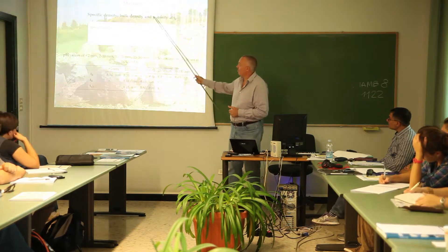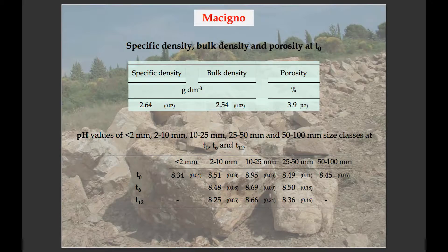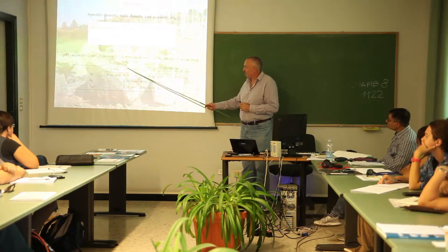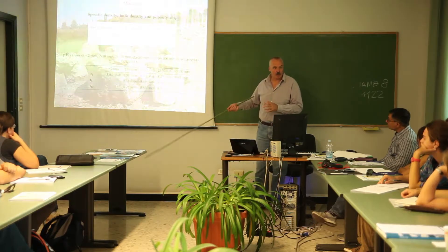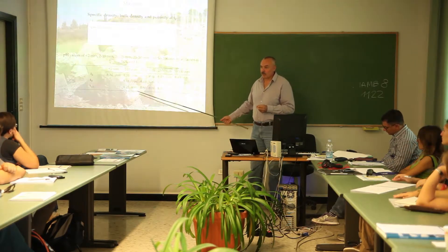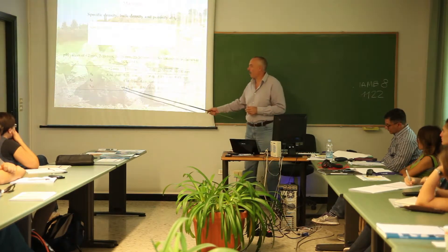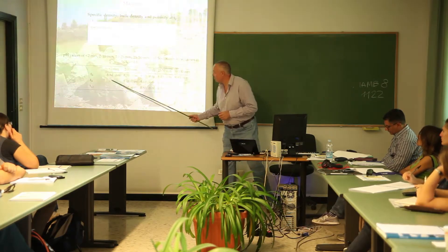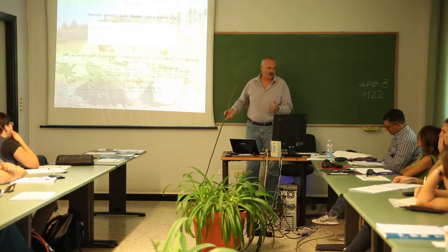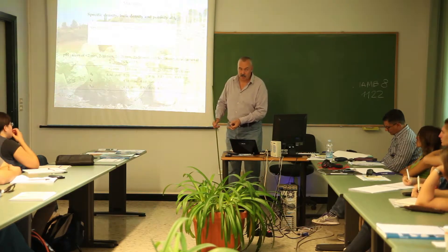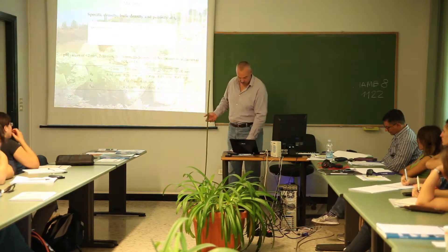The first one, the sandstone macinio: specific density is around 2.6, so porosity is small — with respect to fine earth, a very small porosity, 4%. This is the pH of the different size classes obtained by crushing. The sandstone always contains a little bit of calcium carbonate, so pH is around 8.3–8.9, depending on the possibility to also have a little bit of sodium carbonate, which may raise the pH. But this is not really exciting data — quite normal.